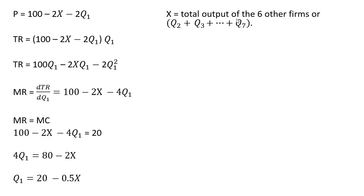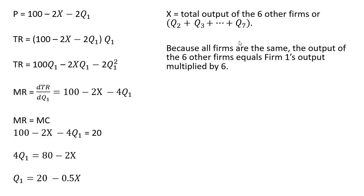Recognizing that X is the total output of the other six firms, as we defined earlier, the output of firm 2 through firm 7. And because all firms are the same, the output of the other six firms equals firm 1's output multiplied by 6. So in other words, X equals 6 times the output of firm 1. Each firm is the same. Each firm is going to produce the same amount of output. So the output of the other six firms will just be 6 times the output of firm 1.